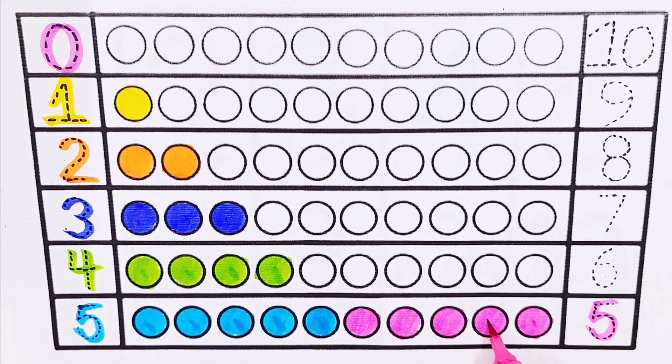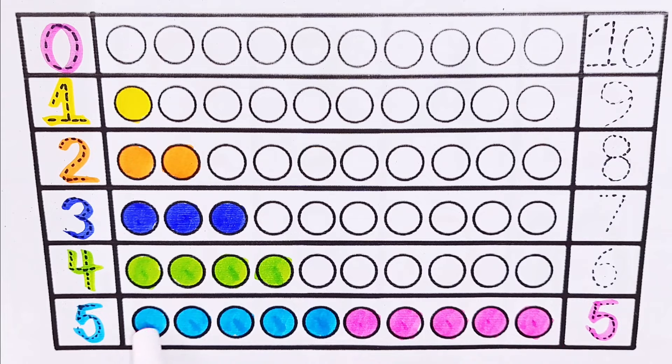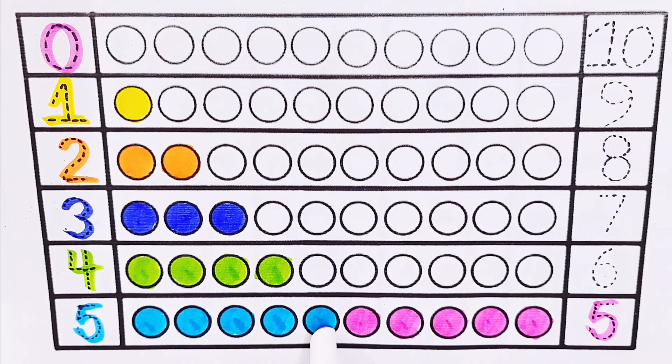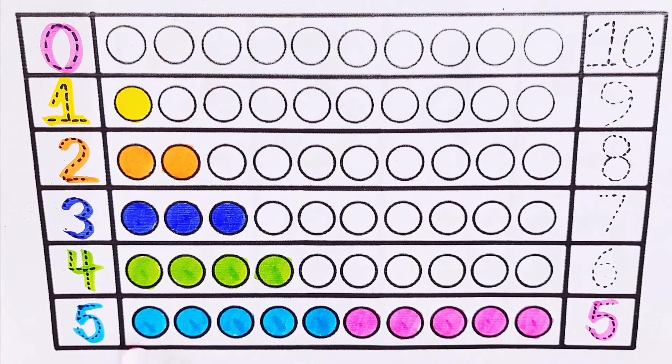5 plus 5 equals 10. 1, 2, 3, 4, 5, 6, 7, 8, 9, 10. 10 balls.